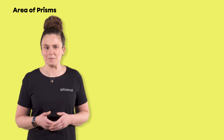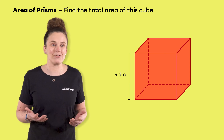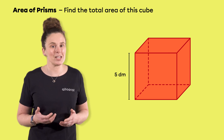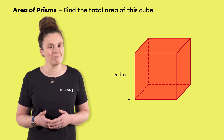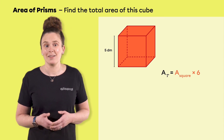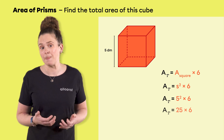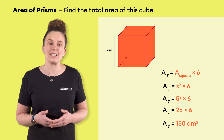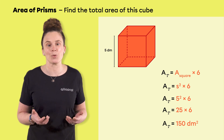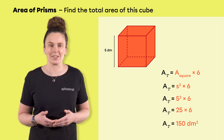Let's look at another example. Here we are looking for the total area of a cube. A cube has a very important characteristic: it is made up of 6 congruent squares. We just have to calculate the area of one of its squares and multiply that value by 6. Since the area of a square is s squared, we replace s by 5 and square it. The total area of the cube is 150 decimeters squared. This is faster than using the formula total area equals twice the base area plus the lateral area. It's up to you to choose the methods you prefer to calculate the total area of a solid.